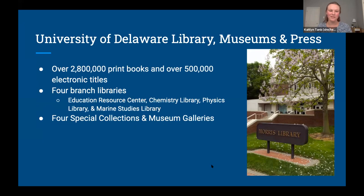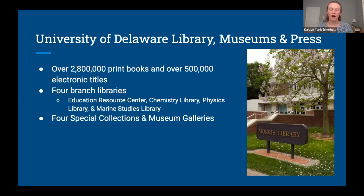Our official name is the University of Delaware Library, Museums and Press. We have over 2 million print books and over 500,000 electronic titles — a number that shot up during the pandemic due to online learning. We have four branch libraries: the Education Resource Center, the Chemistry Library, and the Physics Library on our Newark campus, and a fourth library on a satellite campus in Lewes, Delaware, about an hour and a half away, which is a marine studies-based section of the university. We also have four special collections and museum galleries connected with the library.